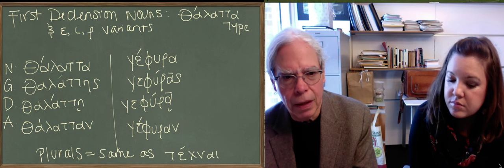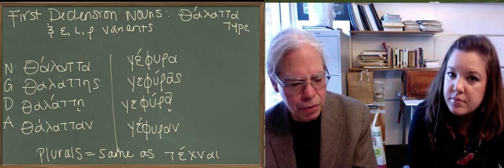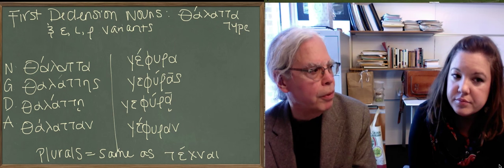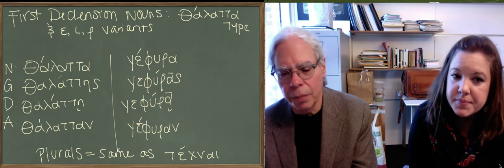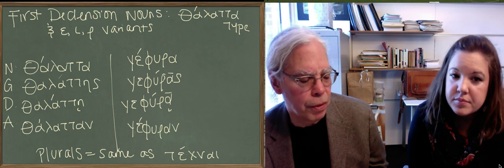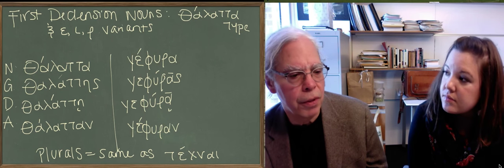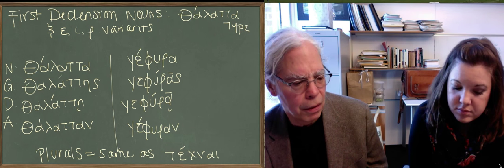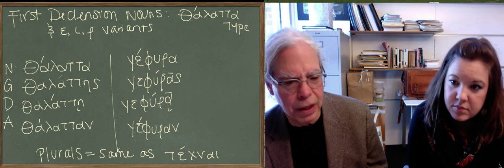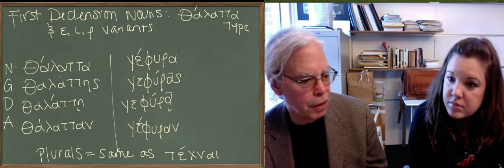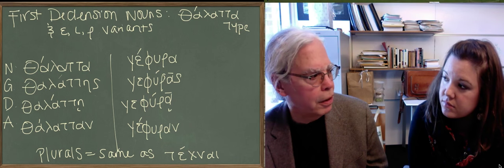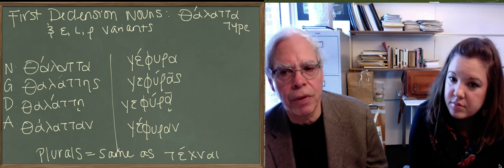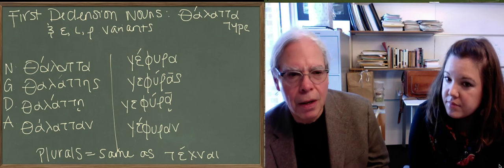So what we're looking at is two new types of first declension nouns, each with an epsilon iota chora variant of the same type. And the point that I just made about these is important: these three types of first declension nouns—the techne type, the data type, and the masculine nouns we're going to learn today—they're only different from the techne type and the chora type in the singular. The plurals of all three types, inflections and plurals, are the same.